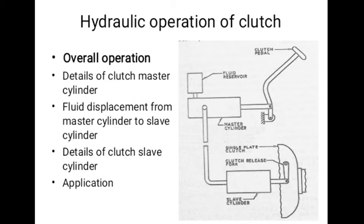The fluid under pressure actuates the slave cylinder pushrod, which further operates the clutch release fork to disengage the clutch.